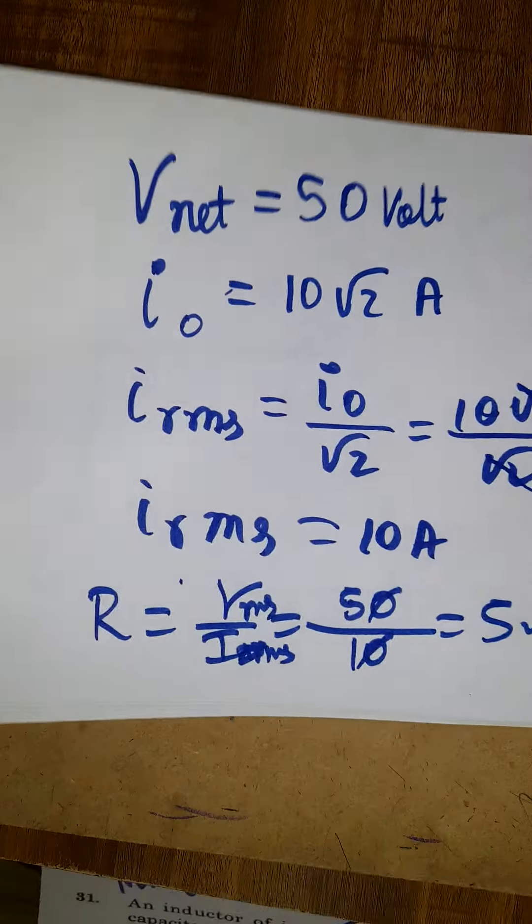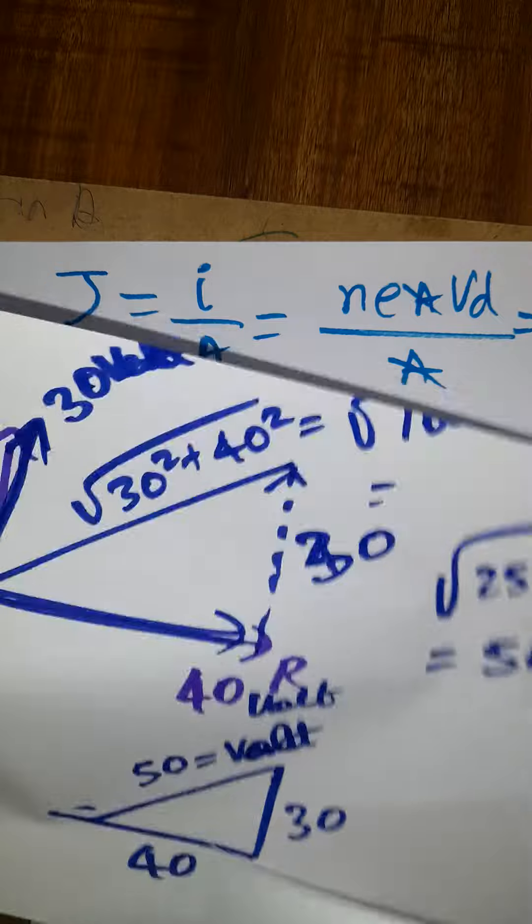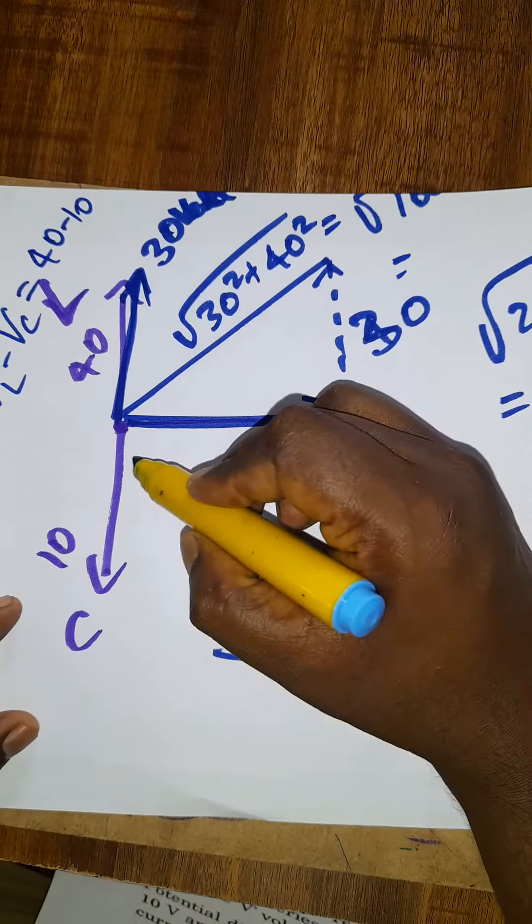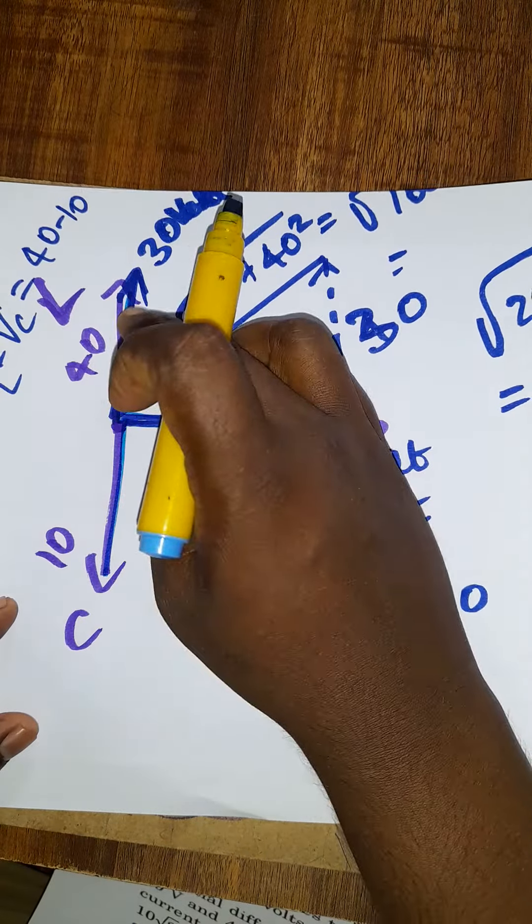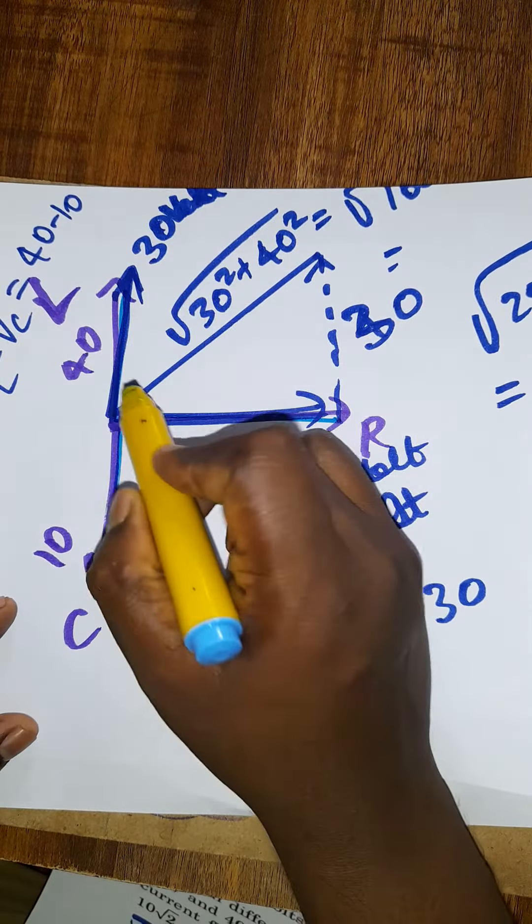Now we should find what is voltage. We have to first find the impedance triangle. L is this side, C is this side, R is this side. L and C will be 180 degrees different, so you can directly subtract.